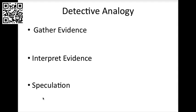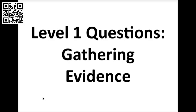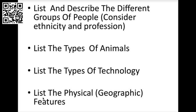We will also make some predictions about the content in the image. For level one, we will consider the different groups, the types of animals, the types of technology, and the physical features.